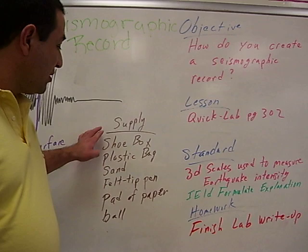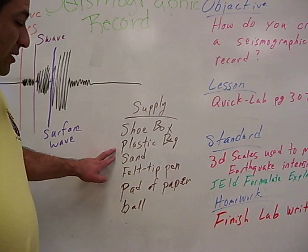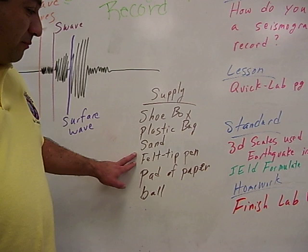The supplies are going to be a shoebox and a plastic bag, maybe a Ziploc bag that you fill with sand and you put inside of the shoebox. And you're going to need a felt tip pen or a vis-a-vis pen, a pad of paper, 8 1⁄2 by 11, and a baseball.